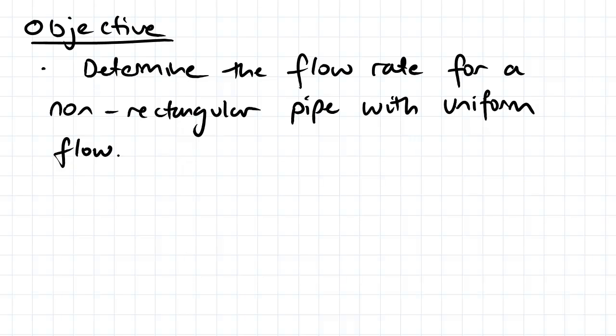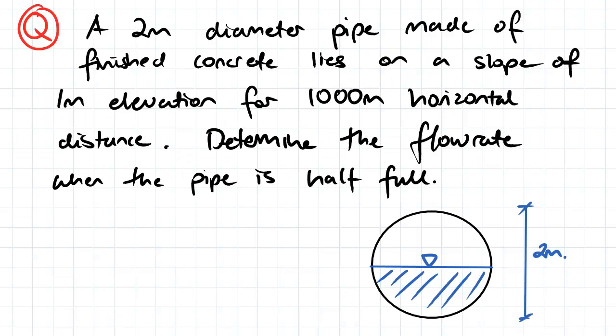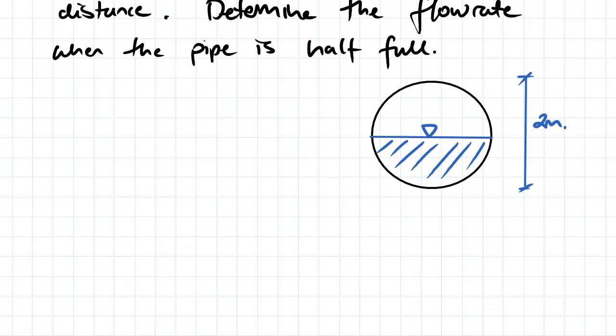Hey guys, the objective for this video is to determine the flow rate for a non-rectangular pipe with uniform flow. Our question here: we've got a two meter diameter pipe made of finished concrete that lies on a slope of one meter elevation for 1,000 meters horizontal distance. So what we need to do is determine the flow rate when the pipe is half full. We've got our pipe here, it's half full.